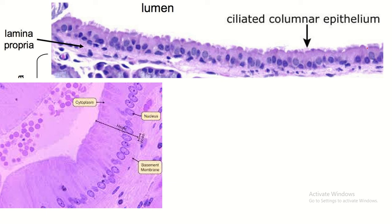The lining epithelium is pseudostratified ciliated columnar epithelium. If you look at the apical region, you can see irregularity and hair-like projections — these are the cilia.